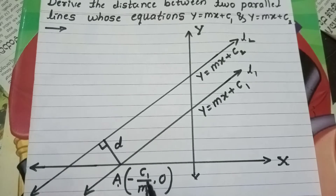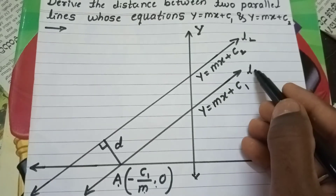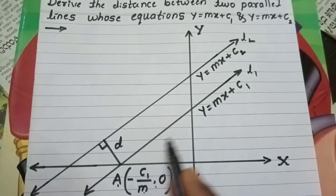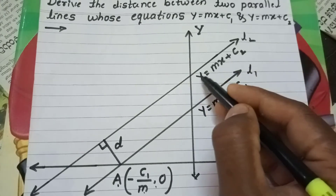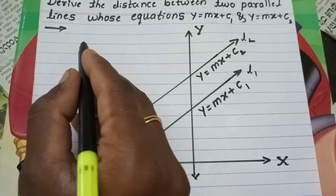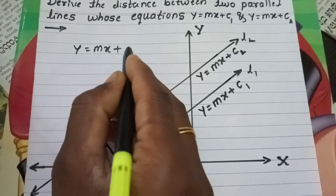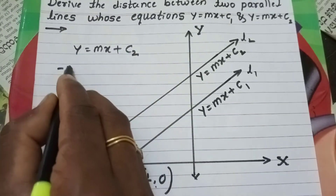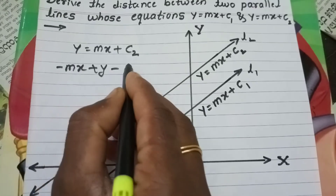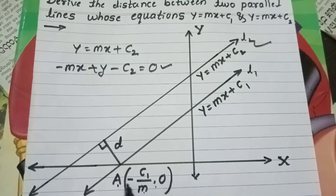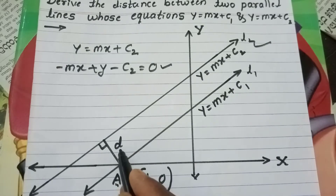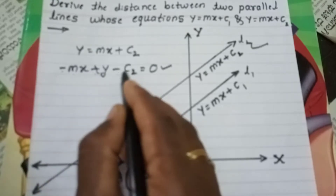So x = -c1/m is the x-coordinate and 0 is the y-coordinate of point A. For line L2, the equation is y = mx + c2, which can be rewritten as -mx + y - c2 = 0. The distance D is measured from point A to line L2.